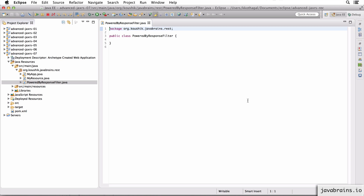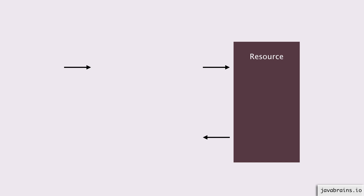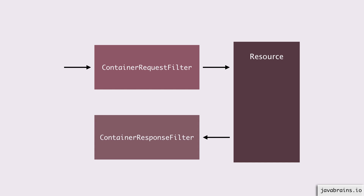What interface you want to implement depends on what you want that filter to be. It turns out there are two types of filters in JAXRS: one is a request filter and one is a response filter. A request filter is a filter that executes before a request is served, and the response filter is a filter that's executed after the response is prepared and it's about to be sent to the client. So you're basically intercepting either the request or the response. Depending on whether you want your filter to be a request filter or response filter, you pick the right interface to implement.